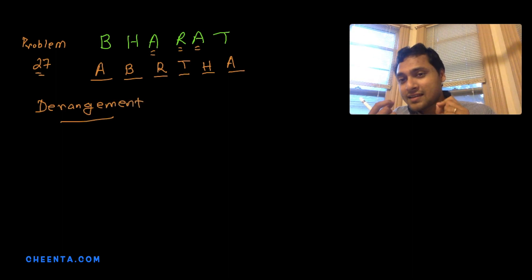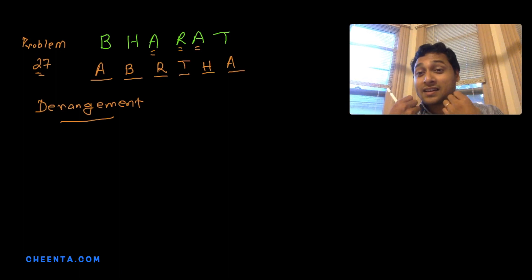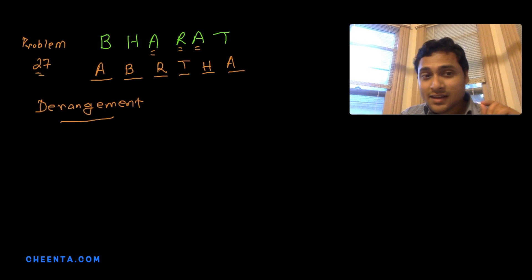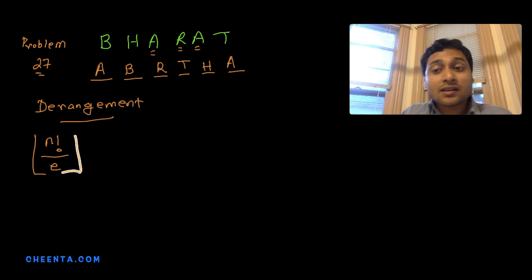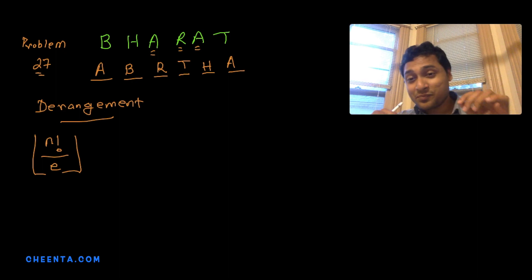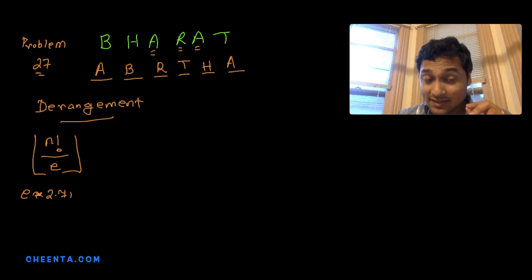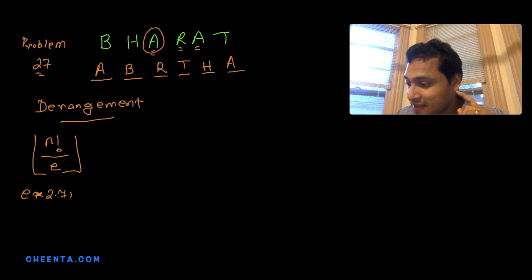A derangement means none of the letters is in its original position — it's completely jumbled. There is a general formula for the number of derangements: n! divided by e (Euler's number, approximately 2.71). However, that formula applies when all elements are distinct. Here, the letter A repeats twice, so we must be careful.